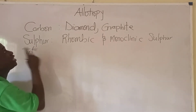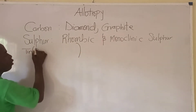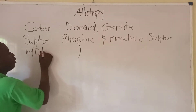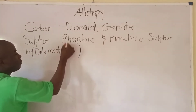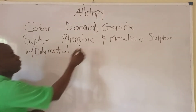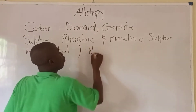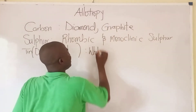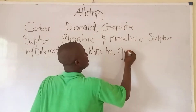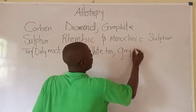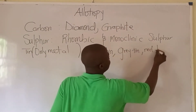It must be noted that tin is a metal, and tin is the only metal that exhibits allotropy. What are the allotropes of tin? We have white tin, gray tin, and red tin.